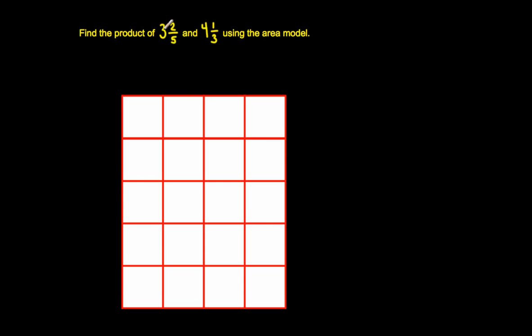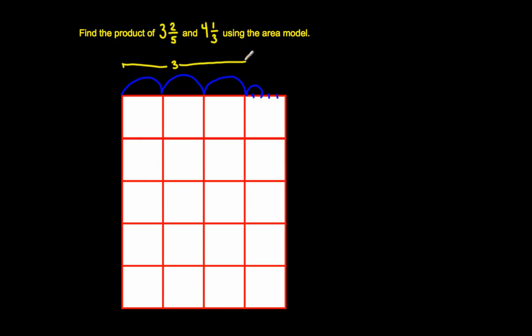Looking at 3 and 2 fifths: 3 and 2 fifths means 3 wholes and 2 fifths of another whole. So I'm going to go for 3 wholes — 1 whole, 2 wholes, 3 wholes — and then 2 more fifths. So I have to break this up into 5 equal parts, and then I want only 2 of those fifths. I can represent that with the number 3 and this number right here is 2 fifths.